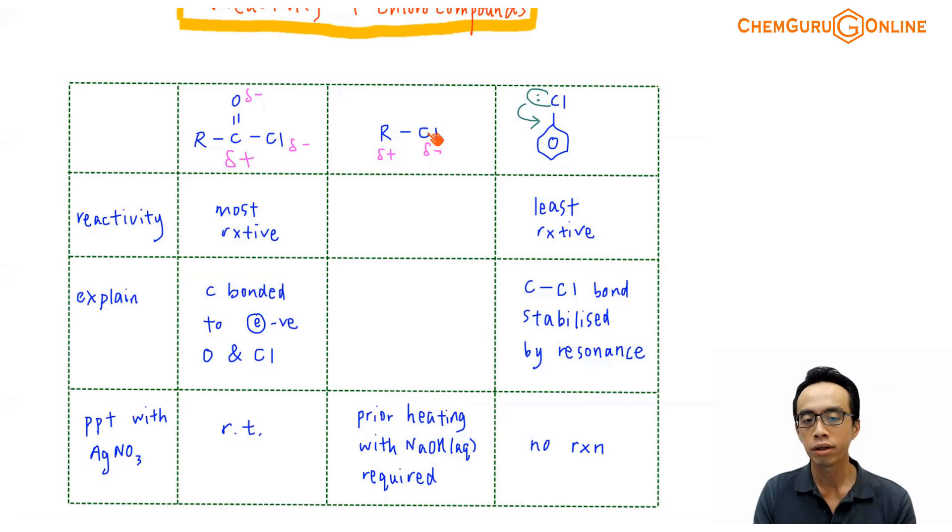How about my chloroalkane? Chloroalkane, it is possible for me to kick out the Cl-, but I need a prior reaction, which is a substitution, nucleophilic substitution, to kick out the Cl-. So what I will do is I need to use NaOH with reflux. Prior heating, the nucleophilic substitution will occur and I can kick out the Cl-, Cl- will be there for precipitation with Ag+.